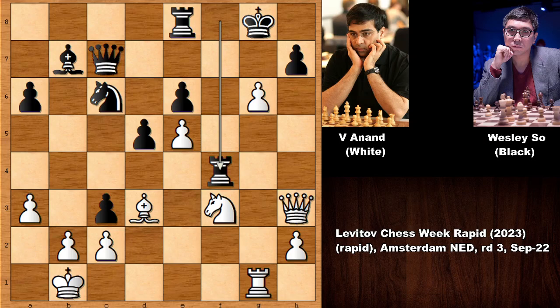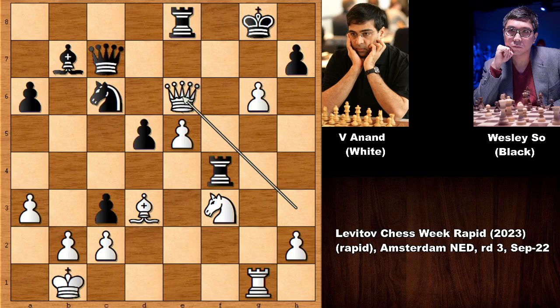If you want, you can always pause the video and try to guess the next move of Viswanathan Anand. So if you are ready — this is what Anand played. He picked his queen and sacrificed on e6. What a move! A breathtaking sacrifice by Viswanathan Anand.